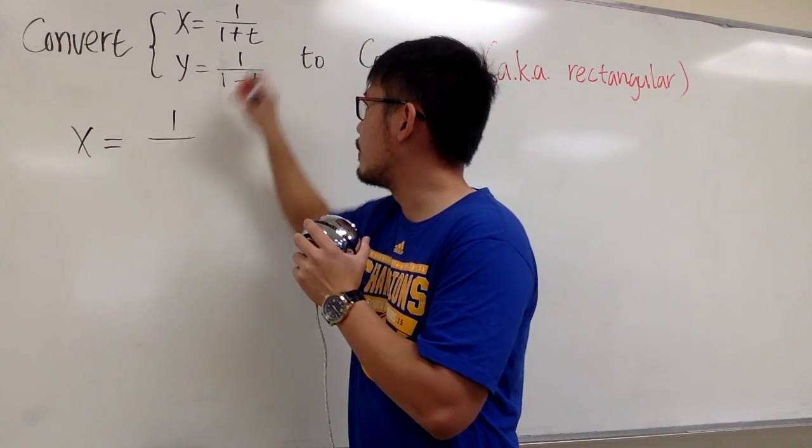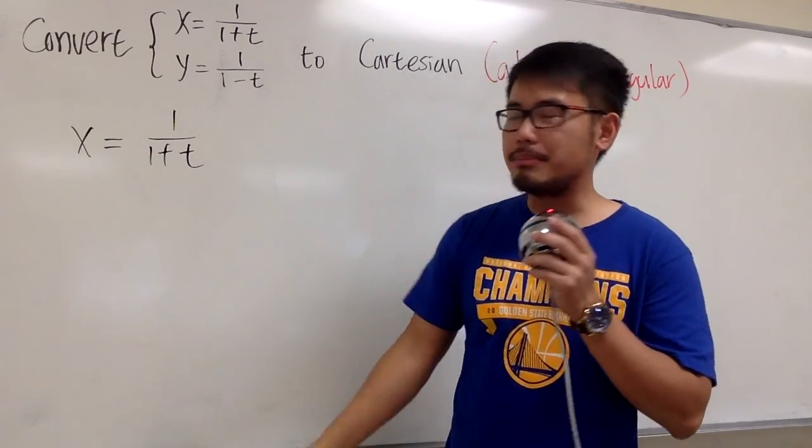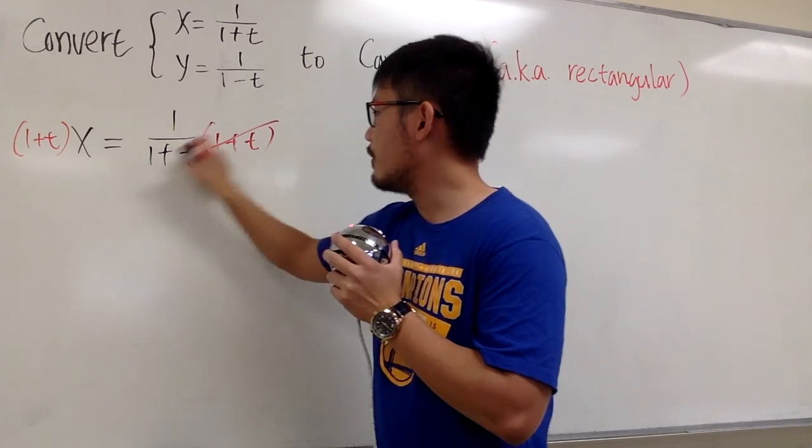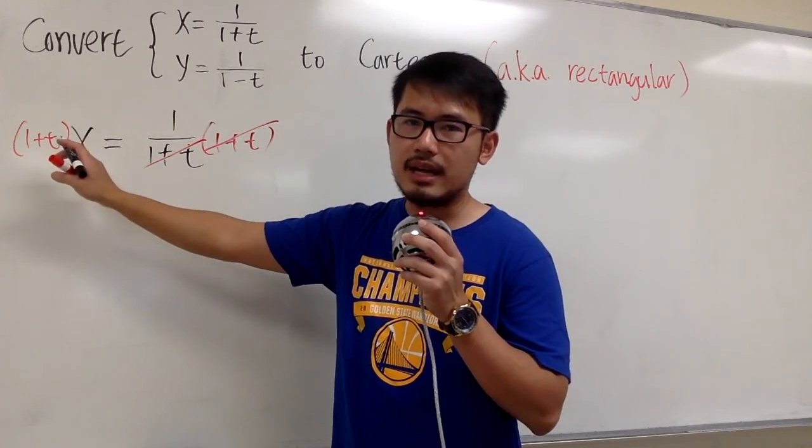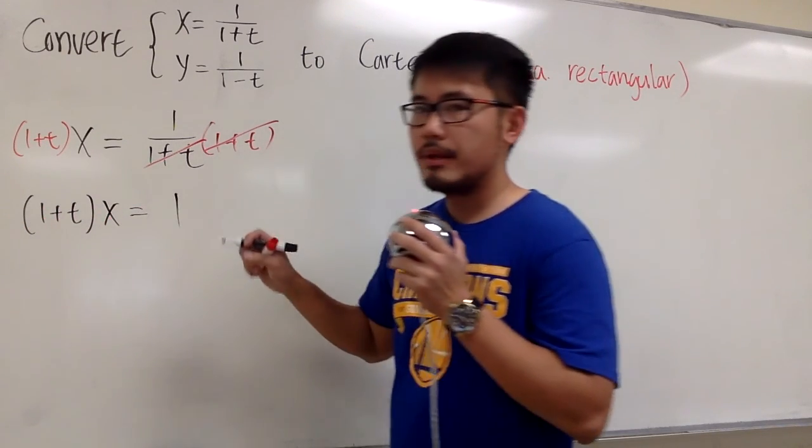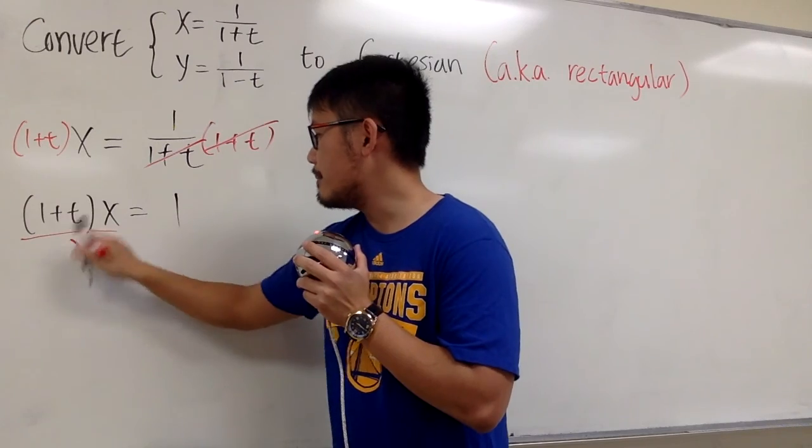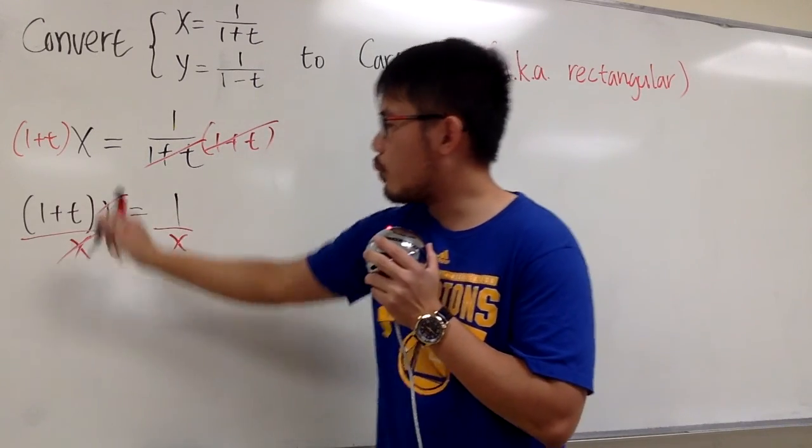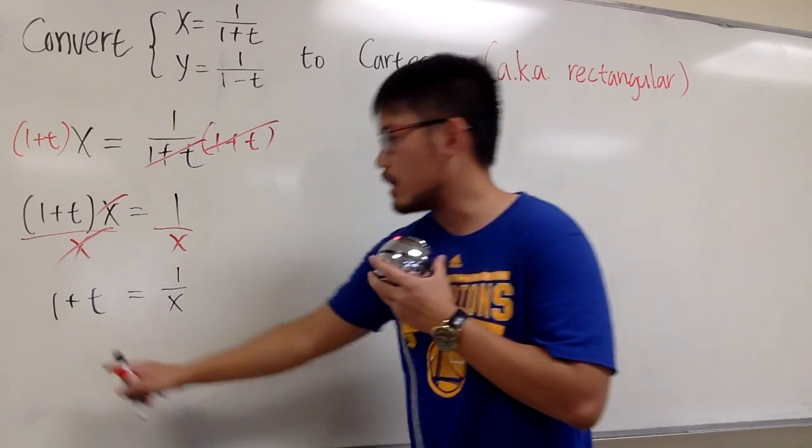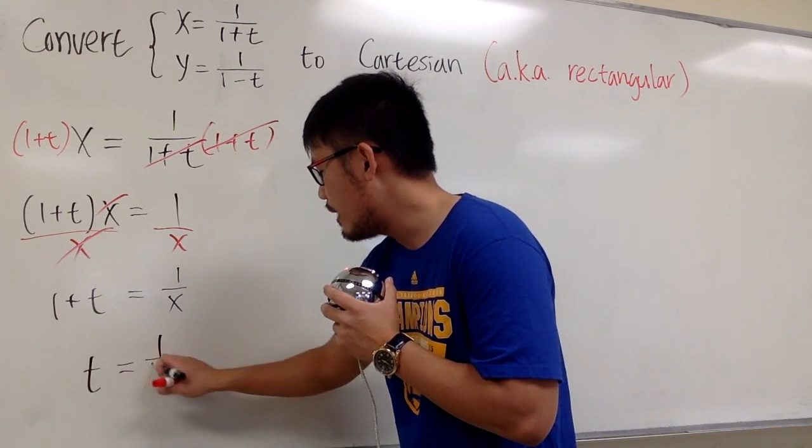x equals 1 over 1 plus t to begin with. This is the equation with a fraction. Let's multiply both sides by the denominator, which is just 1 plus t. This way, we can get rid of the fraction. Let me just put this down as 1 plus t times x is equal to 1. Because our goal is to isolate this t, and we have 1 plus t times x, let's divide both sides by x so that we get 1 plus t on the left-hand side, and this is 1 over x. We can just move the 1 to the right-hand side, so we get the expression t is equal to 1 over x minus 1.